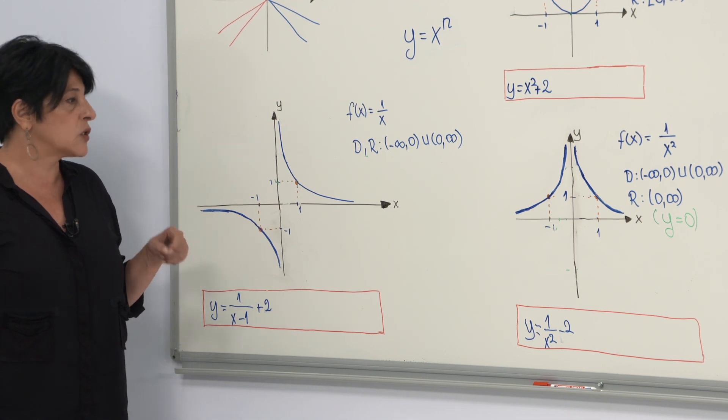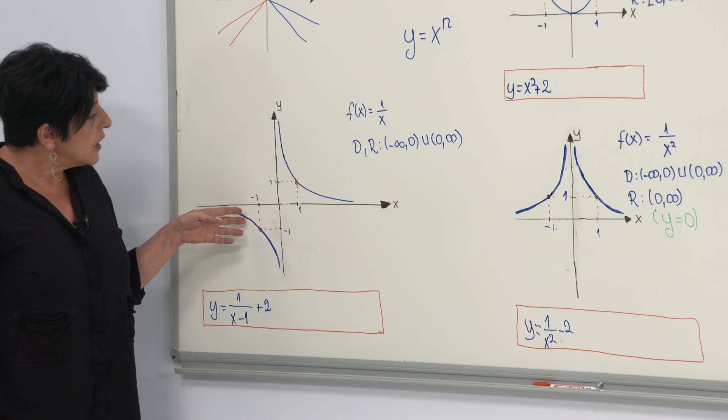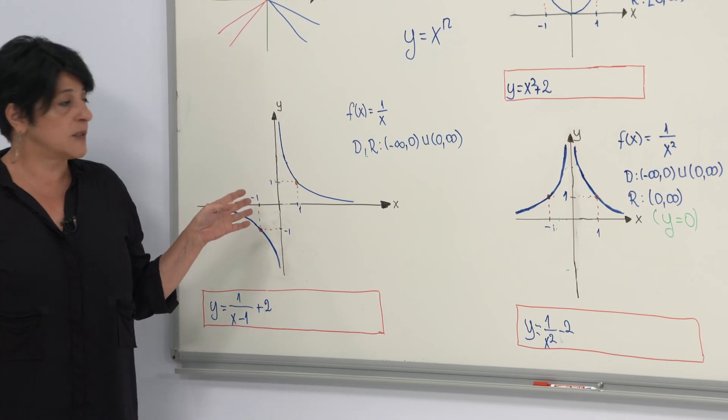It is important because when you draw and shift the graphs, you need to know where your asymptotes are.